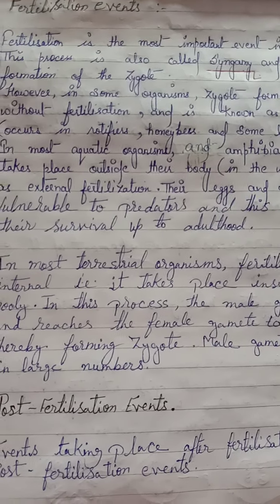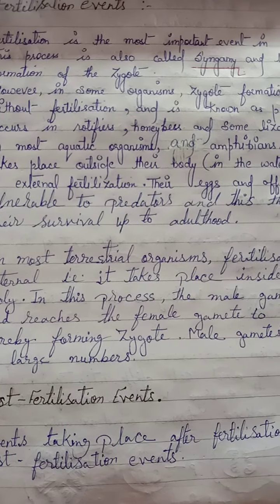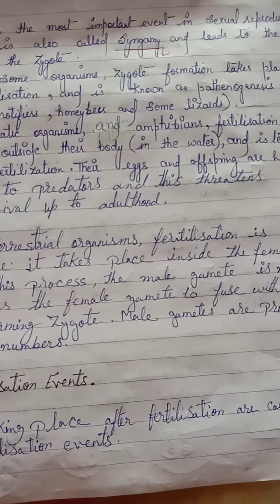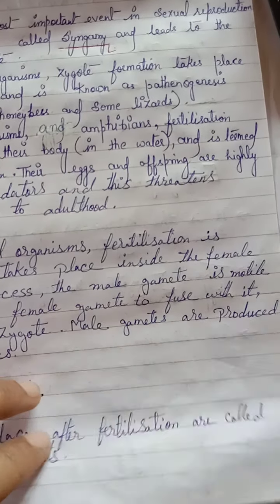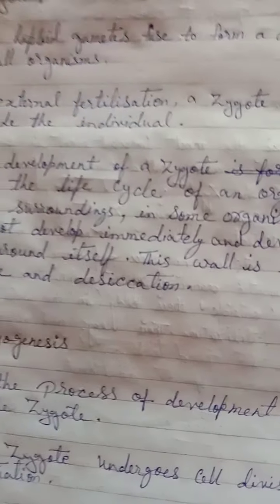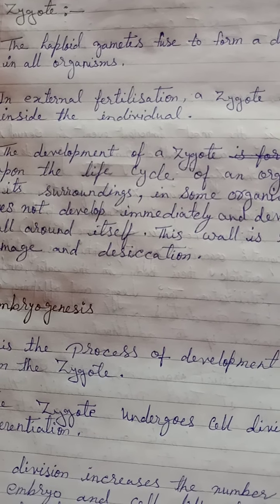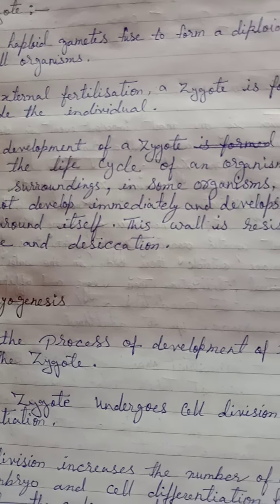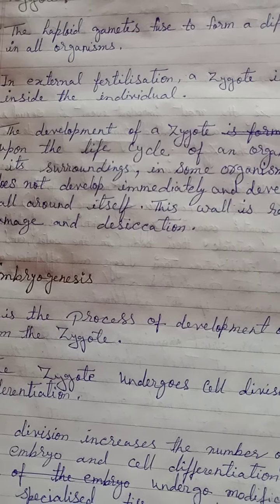Post-Fertilization Events. Events taking place after fertilization are called post-fertilization events. The haploid gametes (N) fuse to form a diploid zygote (2N) in all organisms.